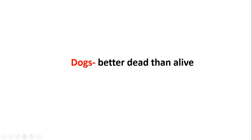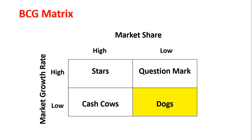Now let's talk about Dogs — better dead than alive. Dog businesses which have low market share and limited growth potential are referred to as Dogs. Since the prospects for such products are limited, it is advisable to phase them out rather than continue with them. When your market share is low and your market growth rate is also low, it's better to leave the business because it will just generate losses.